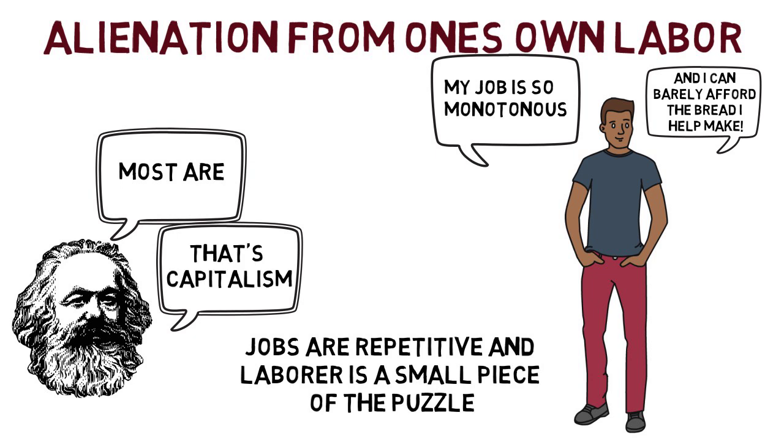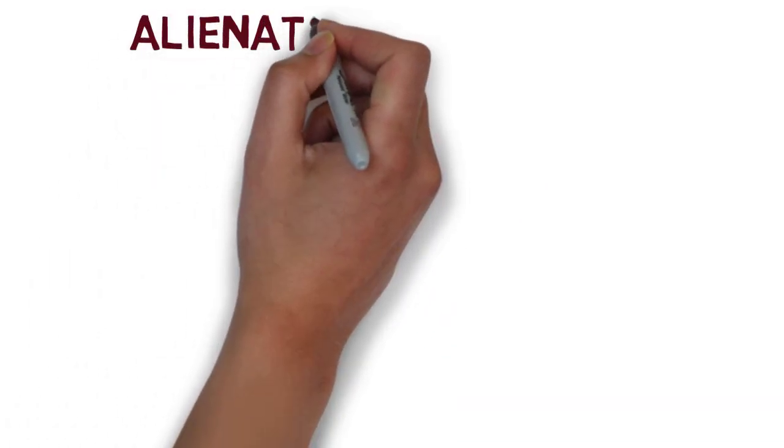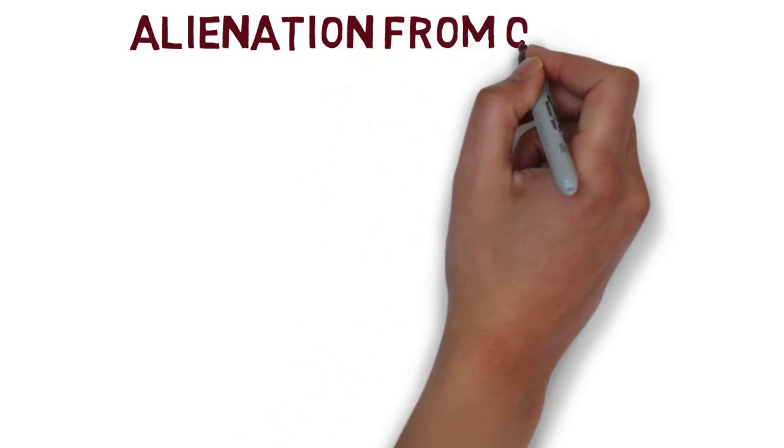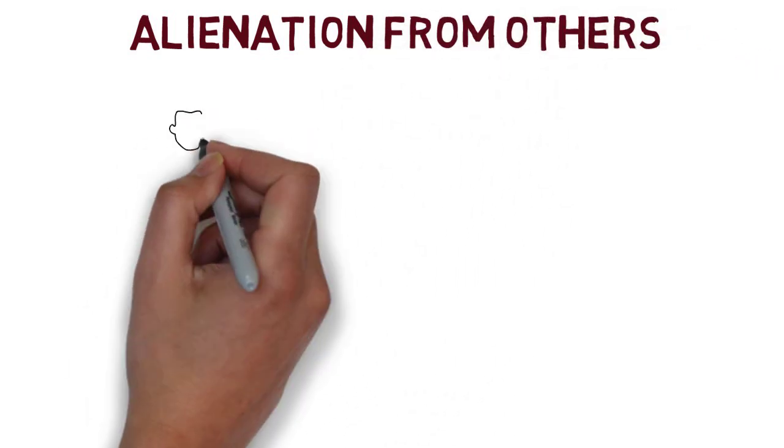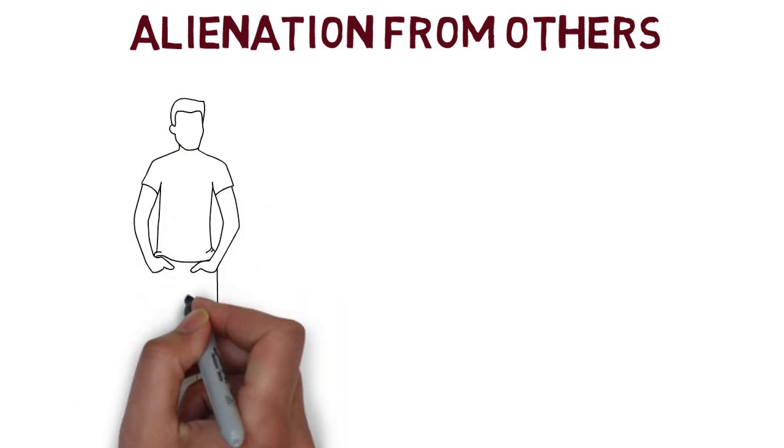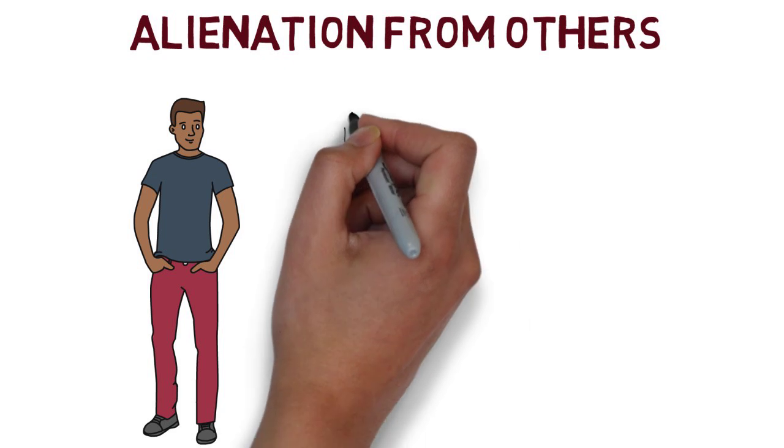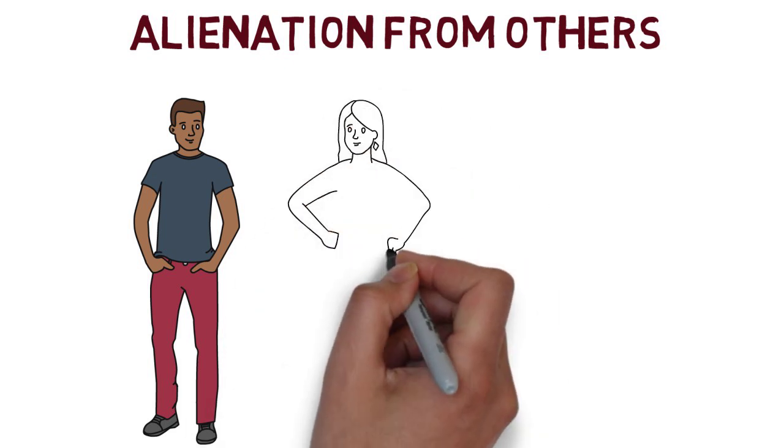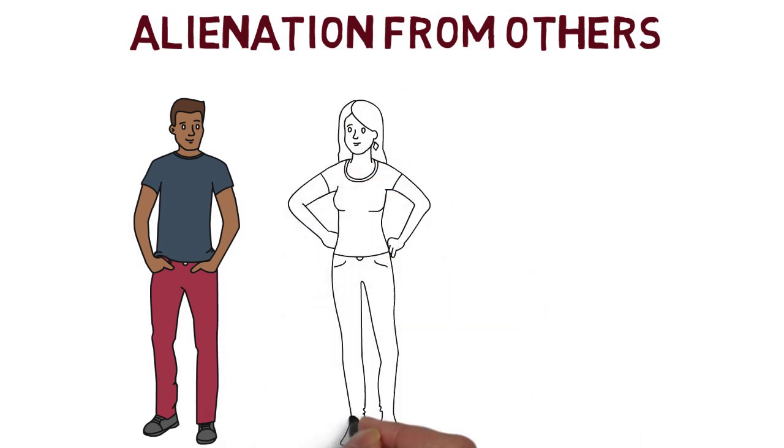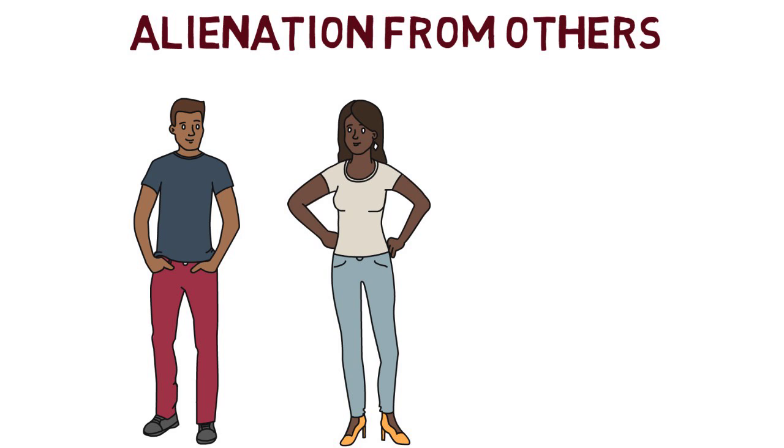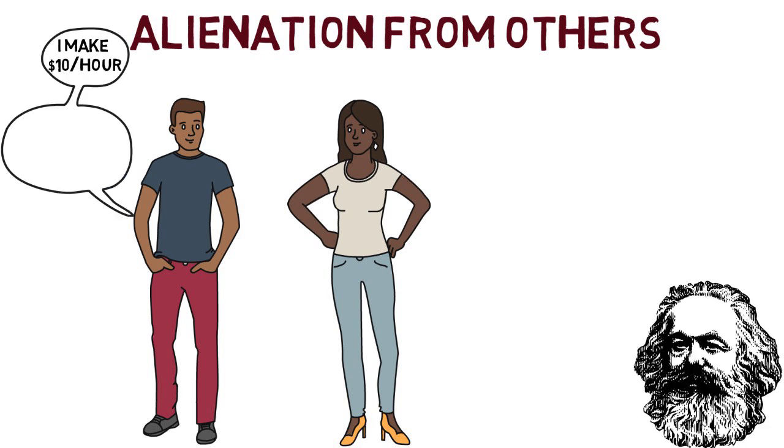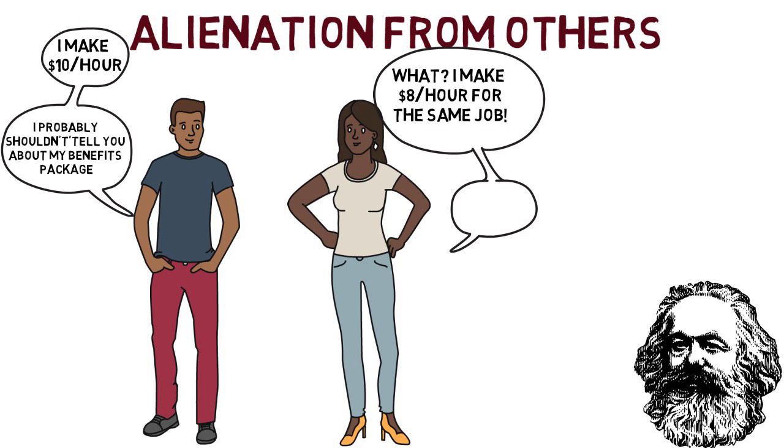Third is alienation from others. Because a laborer's vision and purpose is reduced to wages and because they lack connection to the product and process, it is logical that people would be alienated from one another. The world of capitalism puts people in positions of competition and therefore everyone looks out for themselves. A laborer competes with others for higher wages, better hours, and the best benefits for their own good and not for the best interest of the group. There is little to no concern about a collective common good or a sense of cooperation.